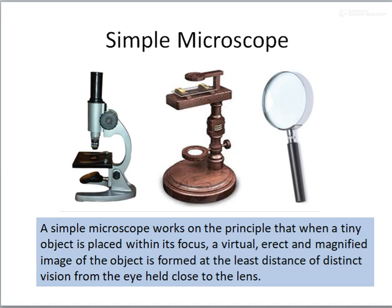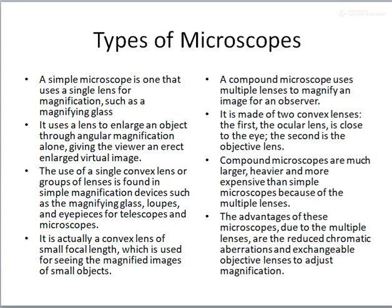When you use a combination of lenses, you call it a compound microscope. A simple microscope uses a single lens for magnification, such as a magnifying glass, and it uses that lens to enlarge an object, giving the viewer an erect, virtual, enlarged image. The use of a single convex lens or a group of lenses is found in single magnification devices such as magnifying glasses, loupes, and the eyepiece for telescopes and microscopes. In the eyepiece of a telescope or microscope, only a single lens is used — usually a convex lens of small focal length — for seeing the magnified images of small objects.